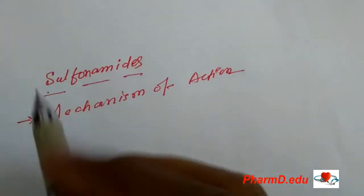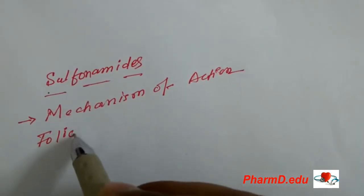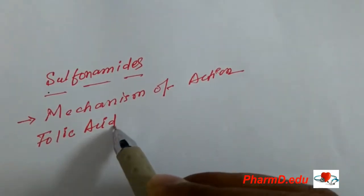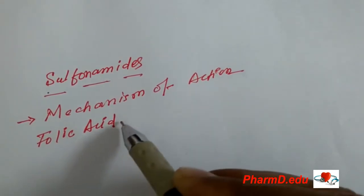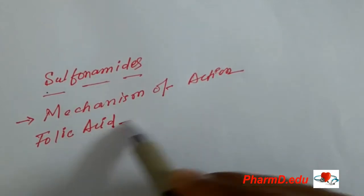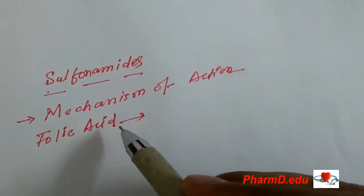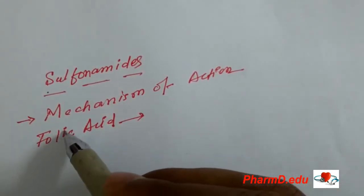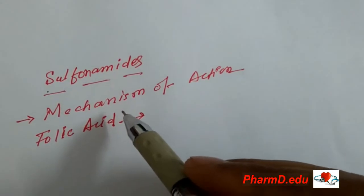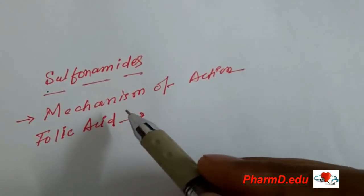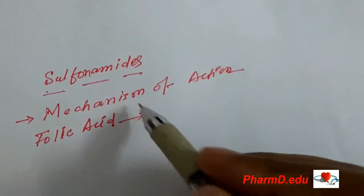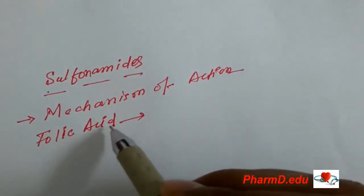Folic acid — you know folic acid — is highly essential in your body. But we cannot synthesize folic acid in our own body; we have to take it from outside. However, bacteria can synthesize their own folic acid. This mechanism is a folic acid-dependent mechanism. Folic acid is useful in the preparation of DNA; it is a precursor of DNA and RNA.